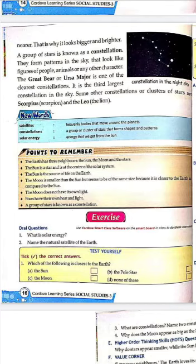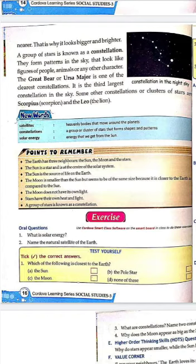The first new word is satellite — heavenly bodies that move around the planet are called satellites. Constellation means a group or cluster of stars that form shapes and patterns in the sky. Solar energy is the energy that we get from the sun — वो energy जो हम लोगों को sun से प्राप्त होती है उसे solar energy कहते हैं।